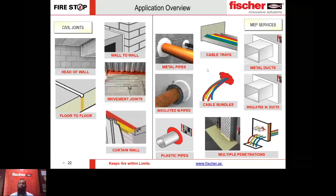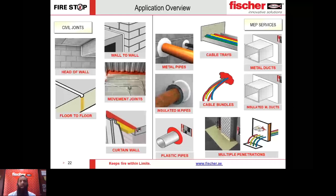For MEP services, you can imagine how many different types of MEP services exist on a project. We will talk about the major ones, and if you have specific questions please keep posting them in the question pane with the relevant slide number. The main MEP services include metal pipes, insulated metallic pipes, plastic pipes, cable trays, cable bundles, multiple penetrations, insulated metal ducts, and metal ducts.